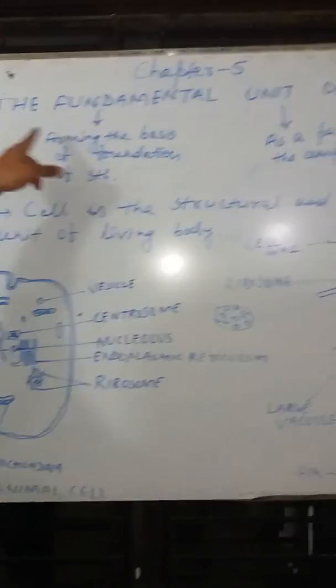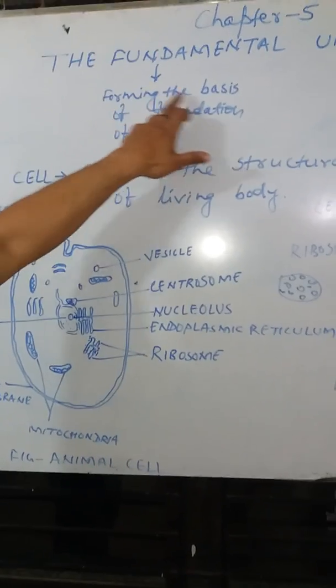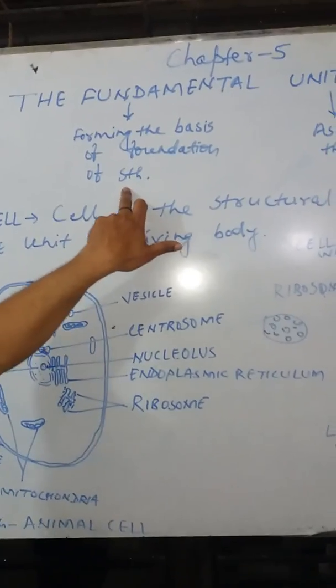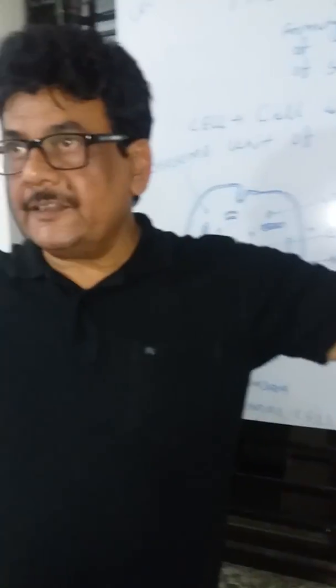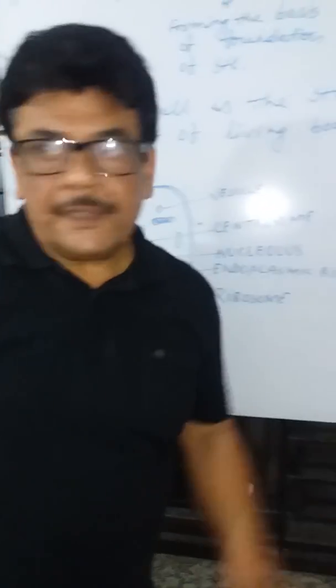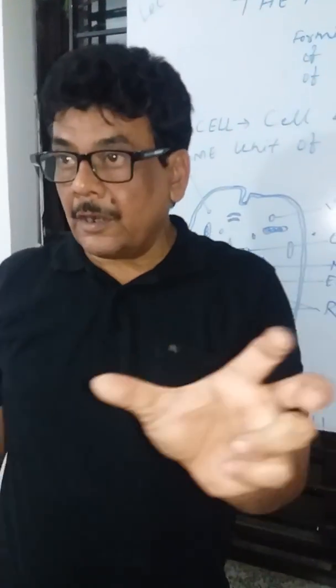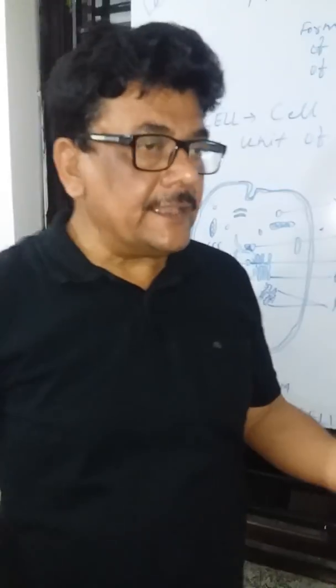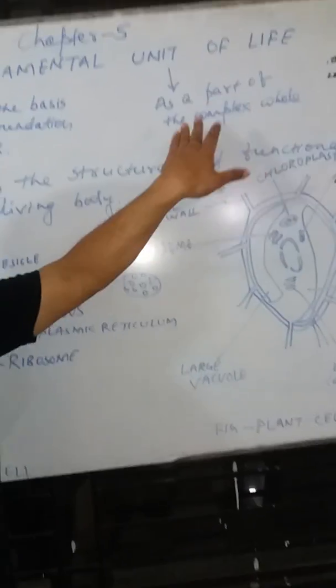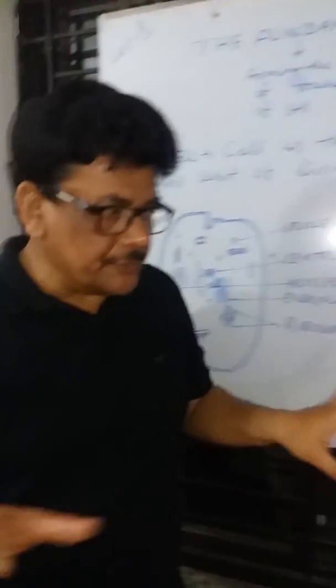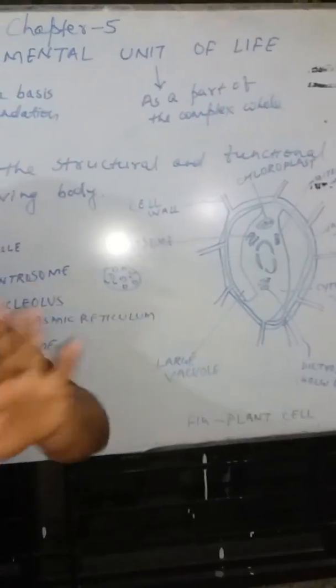Now, without wasting time, we are going to start our chapter: The Fundamental Unit of Life. The word 'fundamental' is related to forming the basis or foundation of something. Here, it refers to the basis of our body. Just as a building is made up of walls and floors, and those walls are made up of bricks — bricks are called the fundamental unit or basic unit of the building.